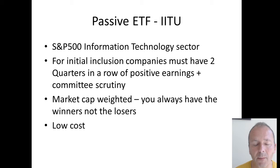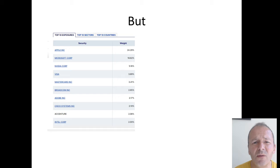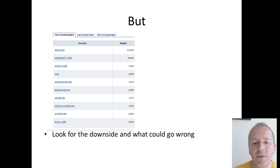You kind of always come out on top and it's also low cost. But the big downside is a huge weighting towards Apple at 24% and a large weighting towards Microsoft at 19%. So it's not really that diversified. If you look at the downside, Apple products are expensive, they might have trouble dealing with China, might have trouble with their supply chain — there are just things that could go wrong.